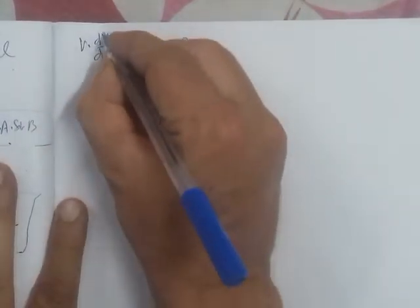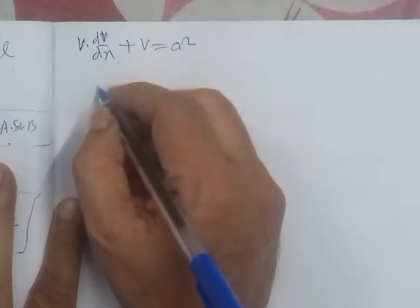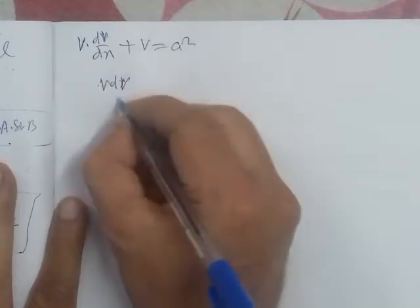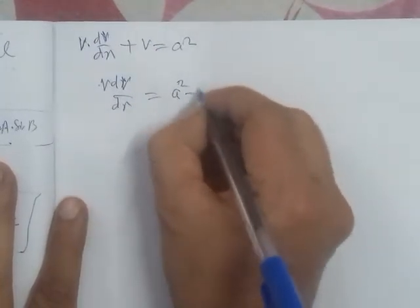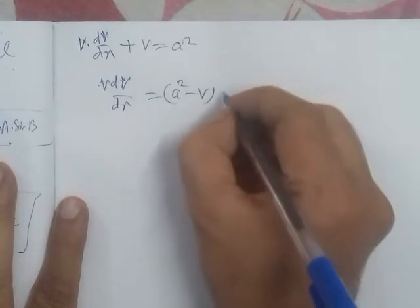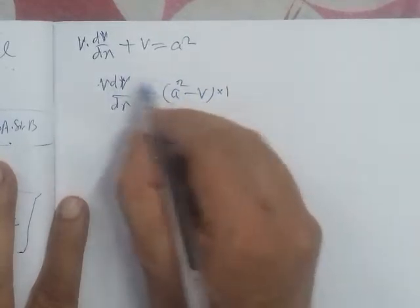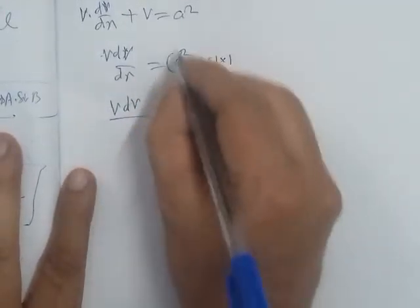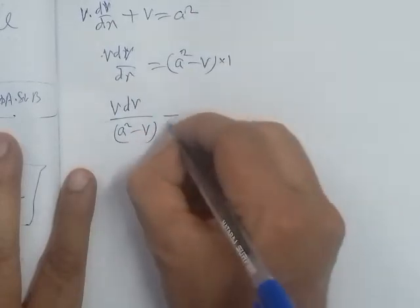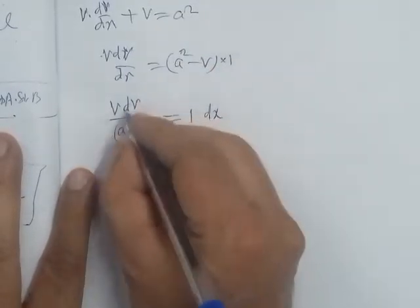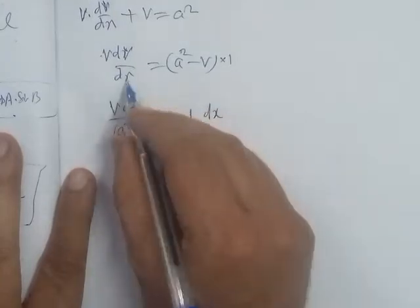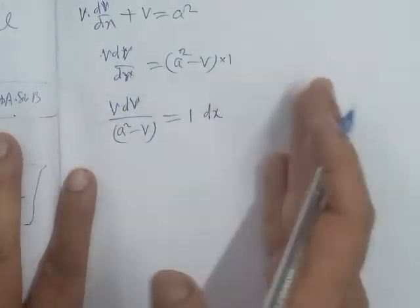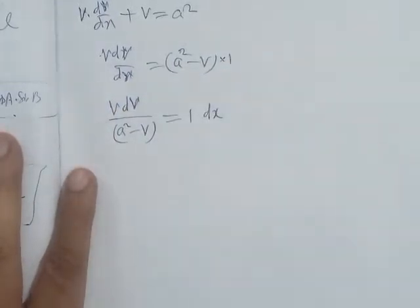Now we can separate the variables. Here v is the dependent variable and x is the independent variable. Moving terms: x square minus v will be on the right hand side. So v dv equals a square minus v squared. We collect dv on the right hand side — both variables v and x are now separated.